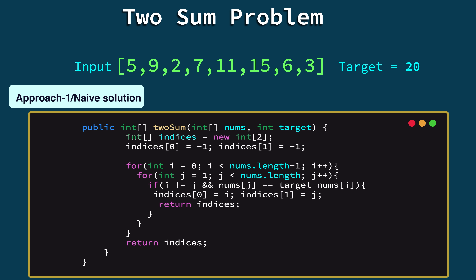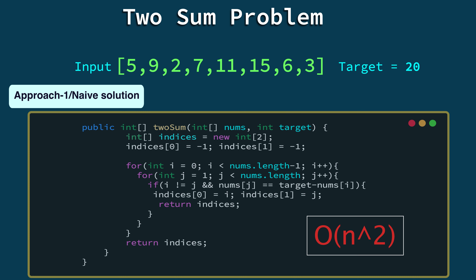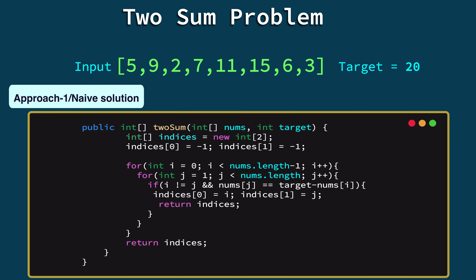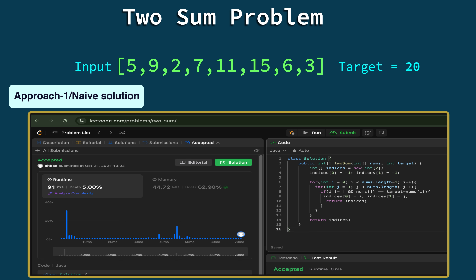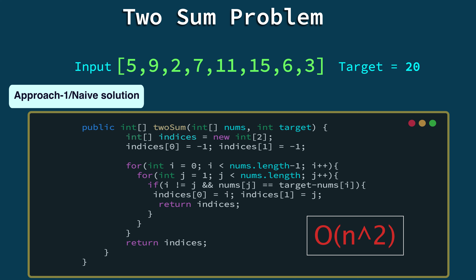This is the naïve solution because it has two nested loops. If the array length is n, the total iterations are n × n. In the worst case, the time complexity is O(n²), which is not optimal. When executed on LeetCode, it took about 91 milliseconds and only beat 5% of solutions — the remaining 95% are more optimal. So now we need to think about how to optimize this.